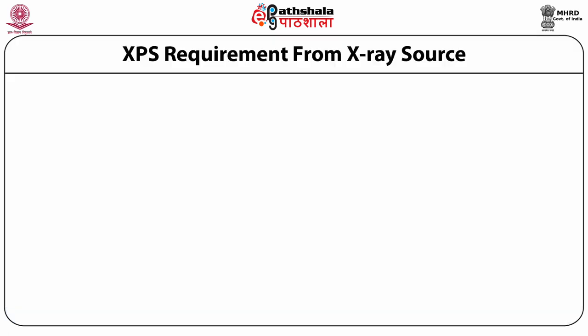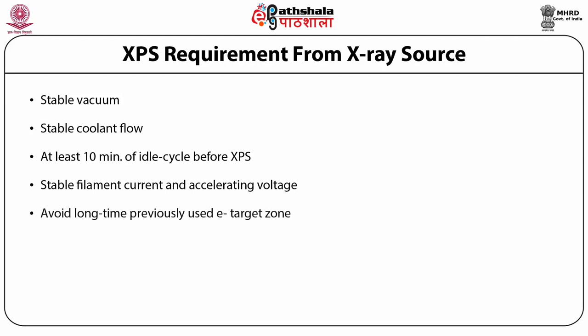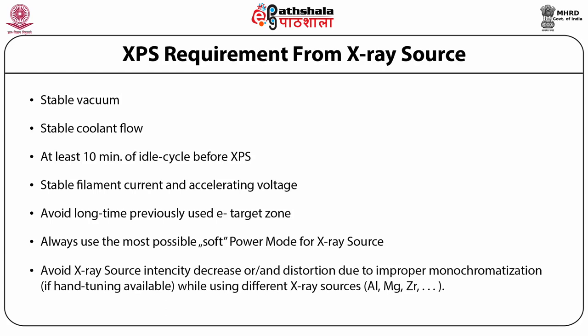XPS requirements from the X-ray source: it should have a stable vacuum and a stable coolant flow. At least 10 minutes of idle cycle before the XPS experiment is needed. A stable filament current and accelerating voltage are required. Avoid long time use of a previously used electron target zone. Always use the most possible soft power mode for the X-ray source. Avoid X-ray source intensity decrease or distortion due to improper monochromatization — in case hand tuning is available. Different X-ray sources include aluminium, magnesium, zirconium, etc.